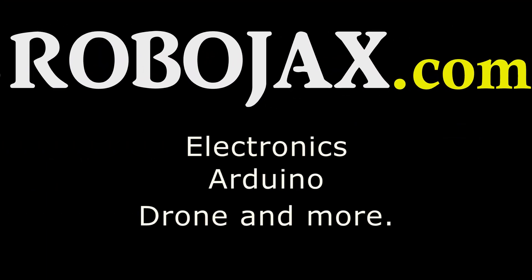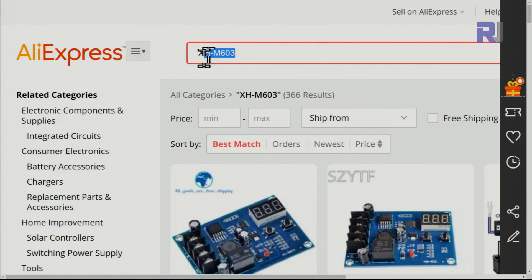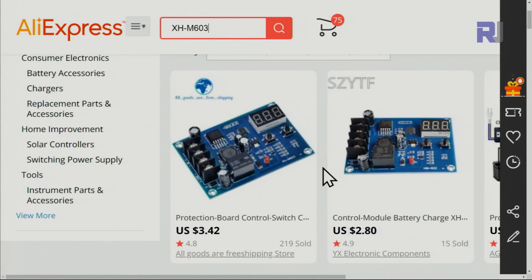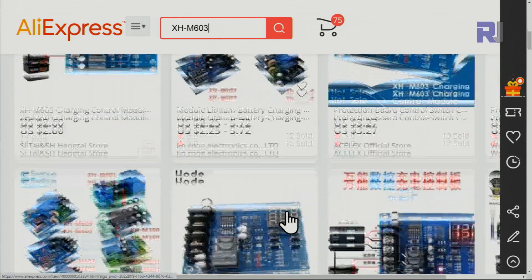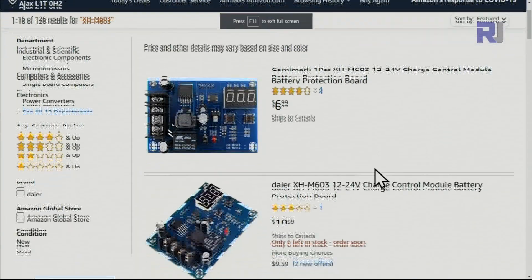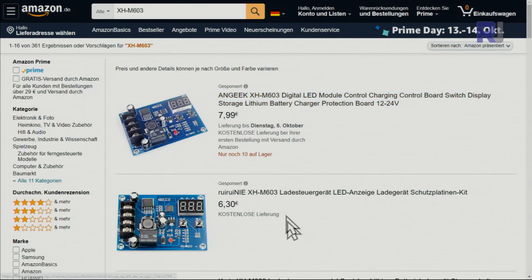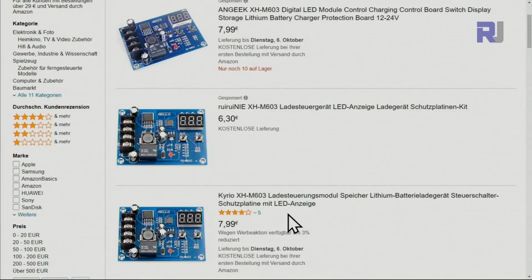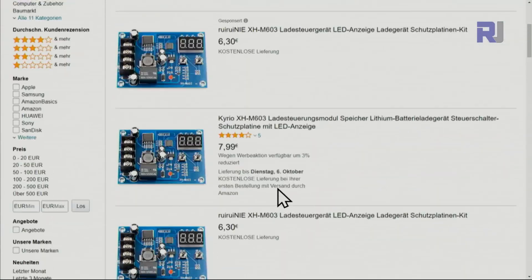The module is sold for around $9 to $10 depending where you buy it from. On AliExpress, if you search XHM603 you will get tons of stores selling this. It's also sold at different prices on Amazon.com and Amazon Germany for around 6 to 8 euros.